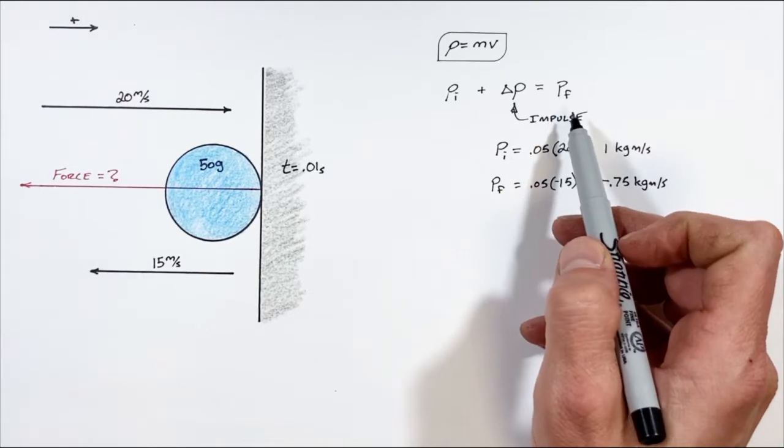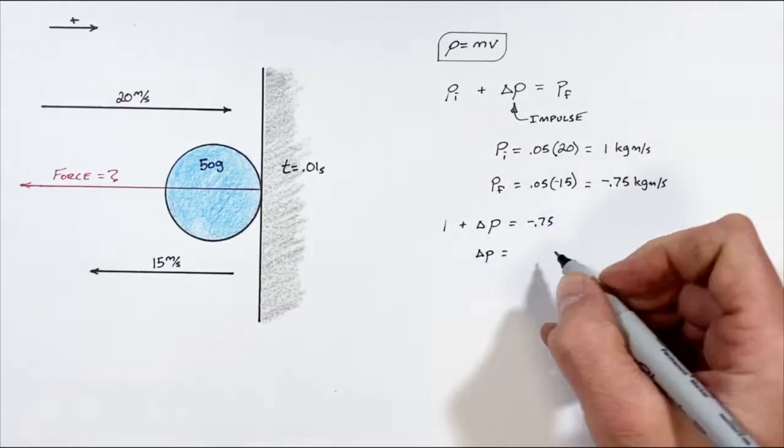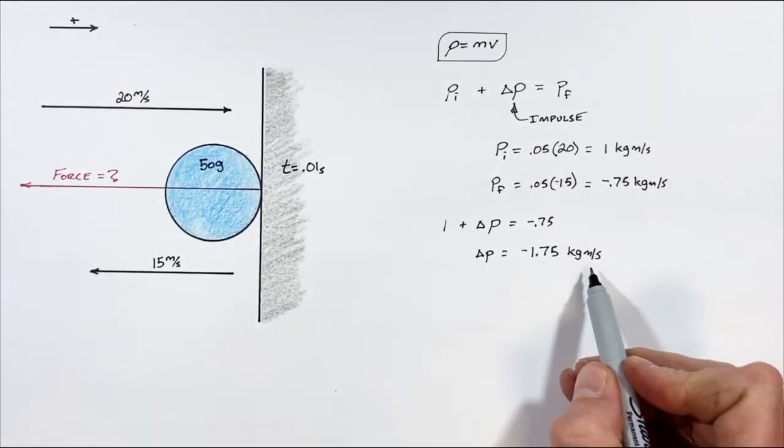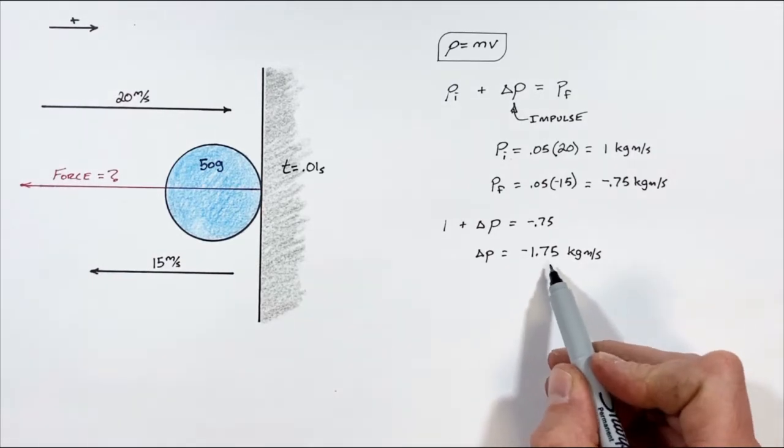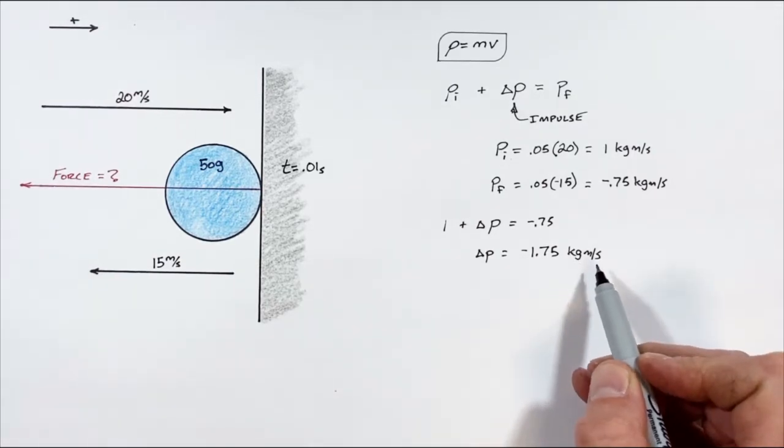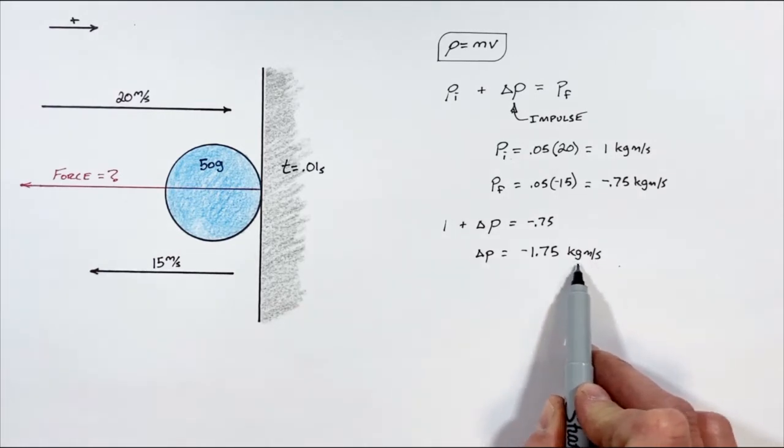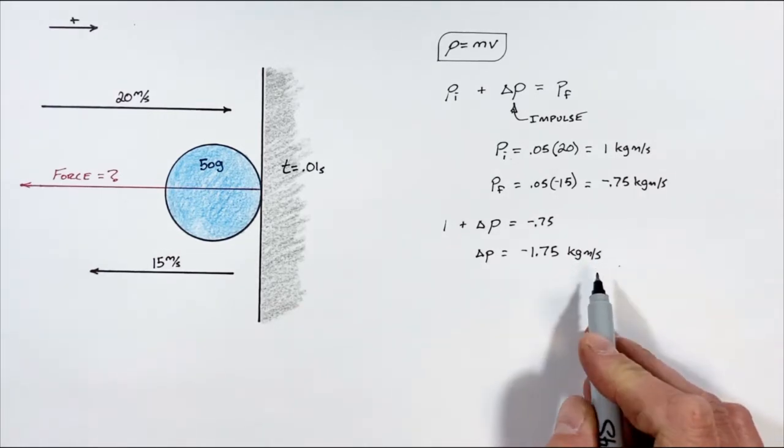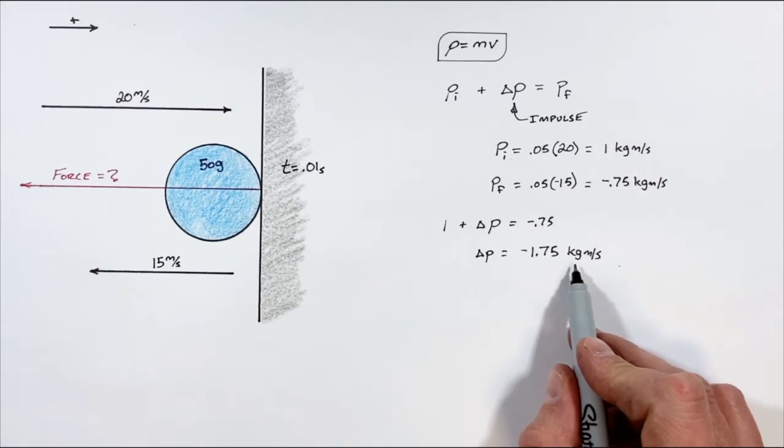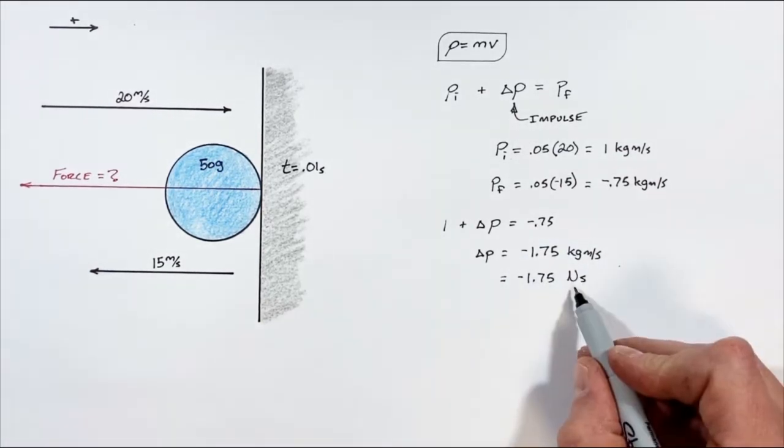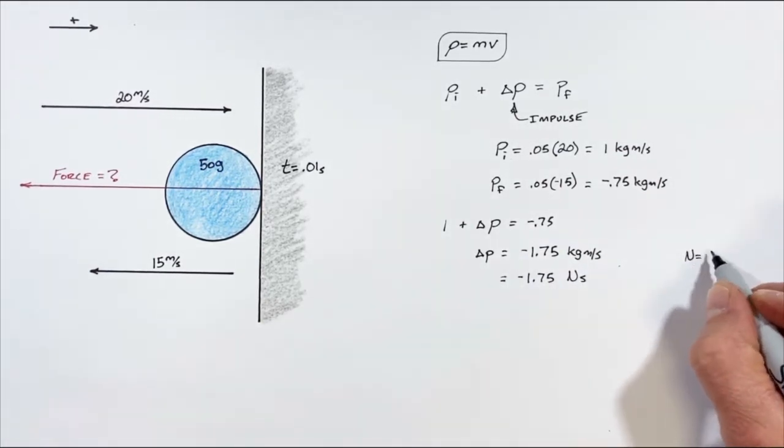Plugging these values into our equation for momentum, we get a change in momentum, or an impulse, of negative 1.75 kilogram-meters per second. Now, the thing about impulse is that it can be shown with units of kilogram-meters per second, but more often you'll see it written as Newton-seconds.